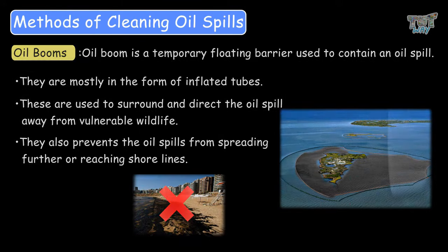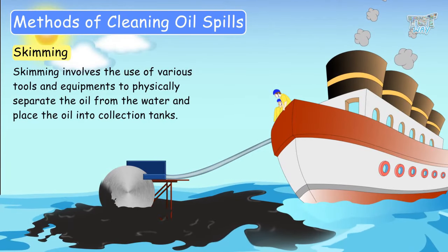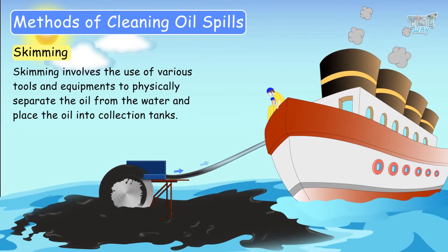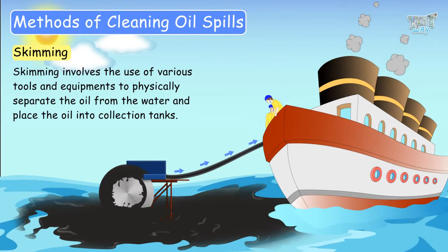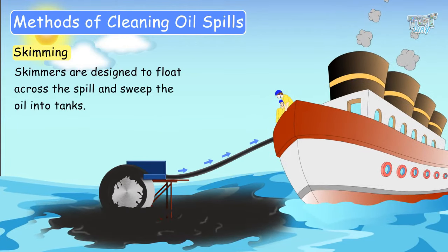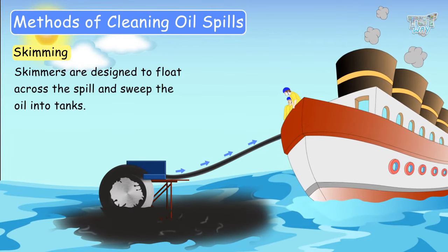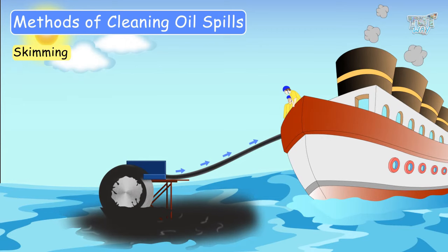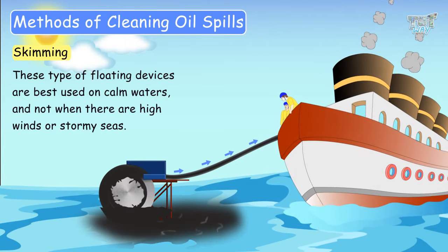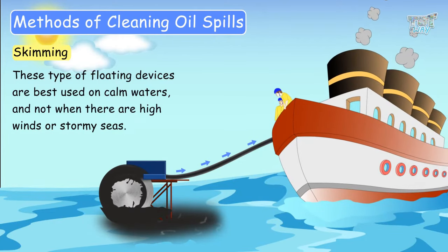Another method is skimming. Skimming involves the use of various tools and equipment to physically separate the oil from the water and place the oil into collection tanks. Skimmers are designed to float across the spill and sweep or scoop the oil into tanks situated either on the coastline or at sea. These types of floating devices are best used on calm waters and not when there are high winds or stormy seas.